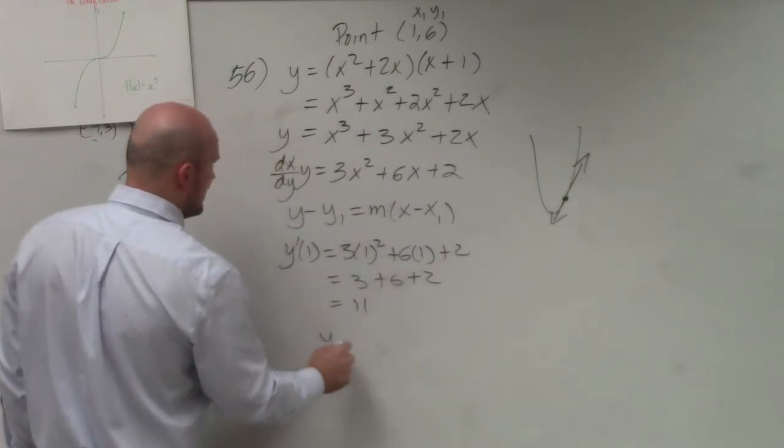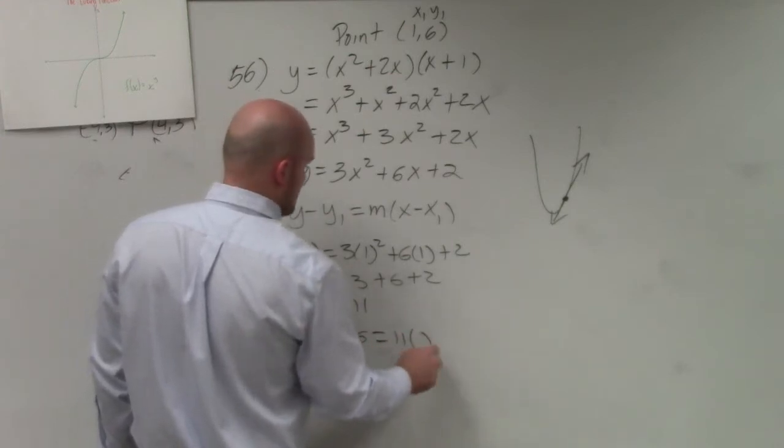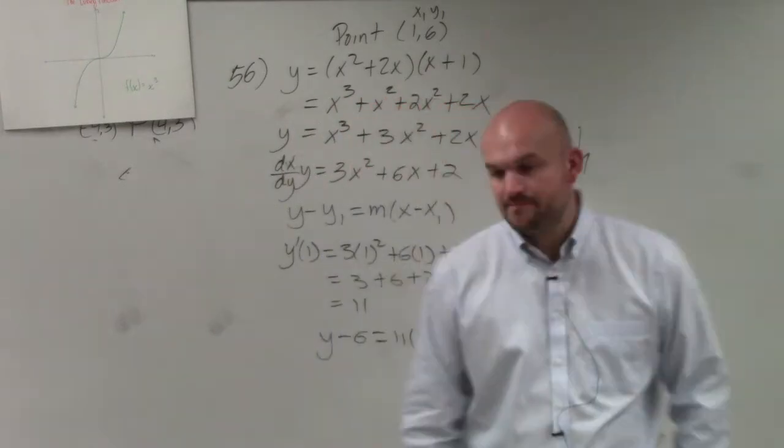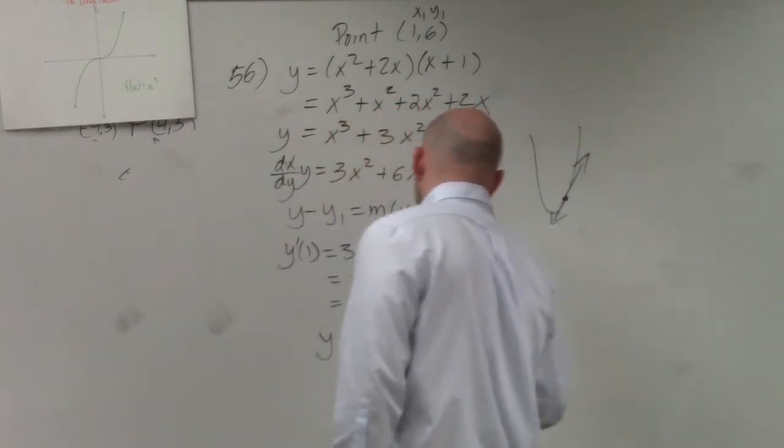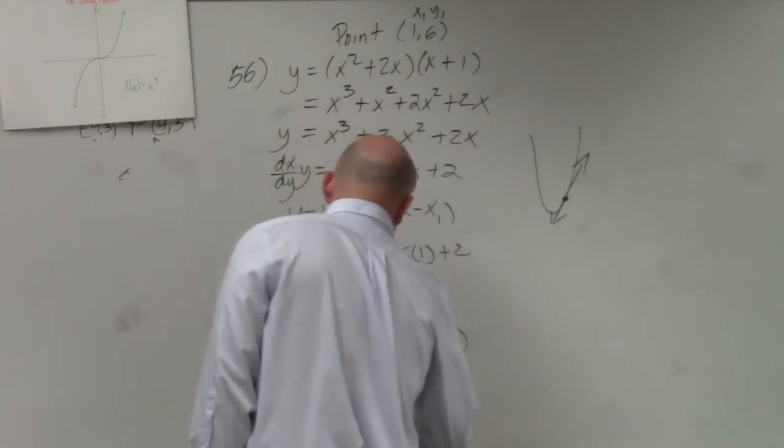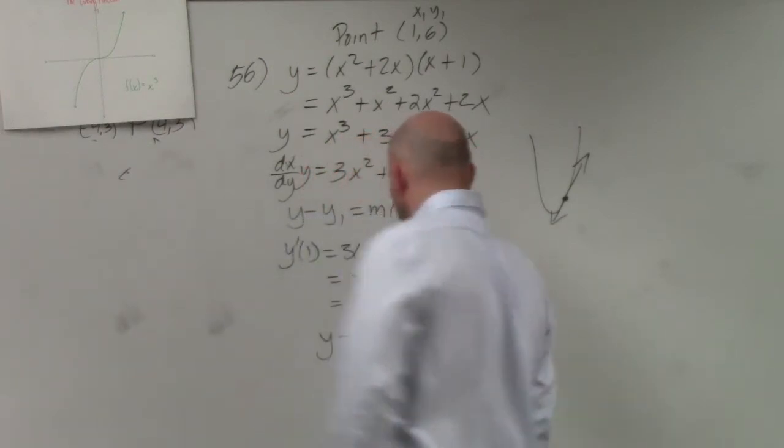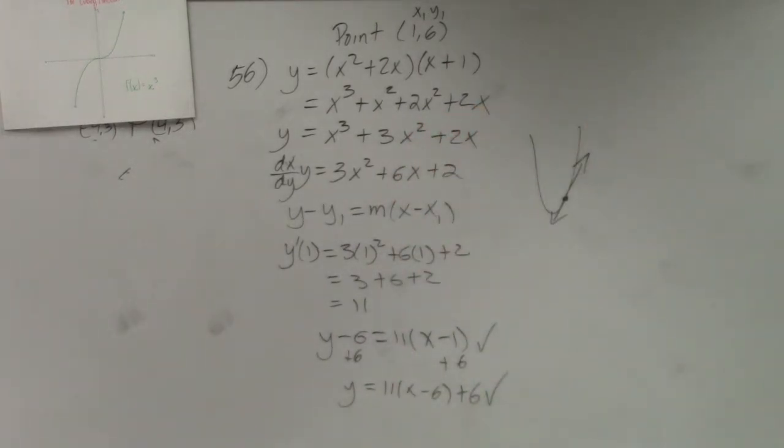Therefore, the equation of my line, y - y₁, which is 6, equals 11 times (x - 1). OK? If you want to set the y by itself, that's fine. That's acceptable. And then obviously, applying the distributive property and simplifying is also acceptable as well. But just note, if you make an arithmetic mistake, you will be marked down.